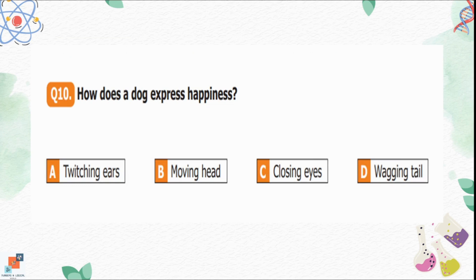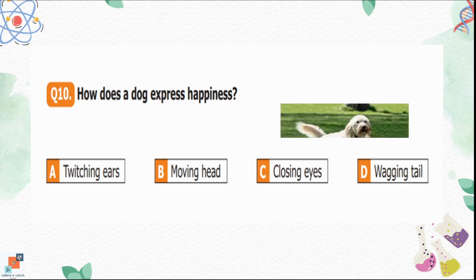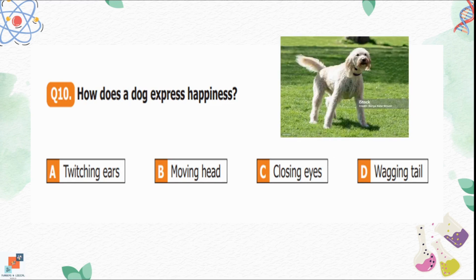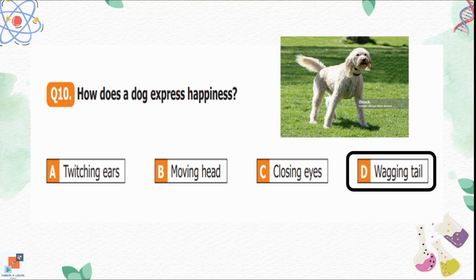Question number 10: How does a dog express happiness? Option A is twitching ears. Option B is moving head. Option C is closing eyes. Option D is wagging tail. A dog shows its happiness by wagging its tail. Option D is the correct option.